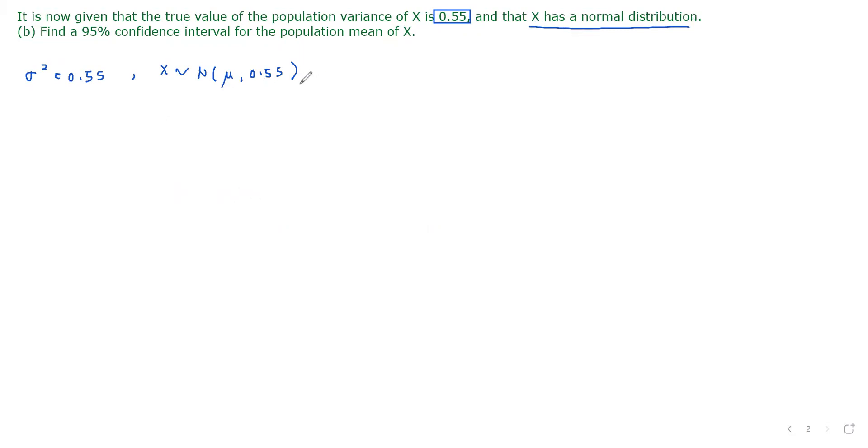We need to find a 95% confidence interval for the population mean of x. To find a 95% confidence interval, we know that the sampling distribution of the sample mean follows normal with mean mu, and the variance is sigma squared over n, over 7 here. So that would be the distribution of the sample mean.